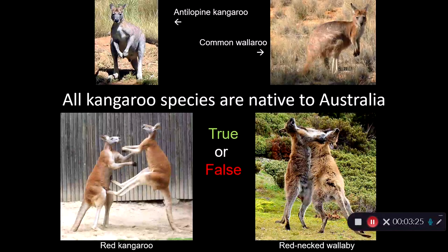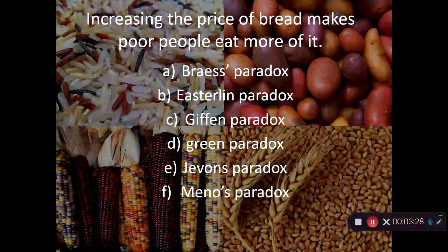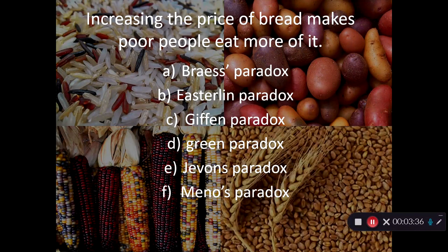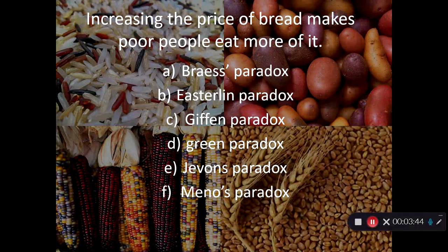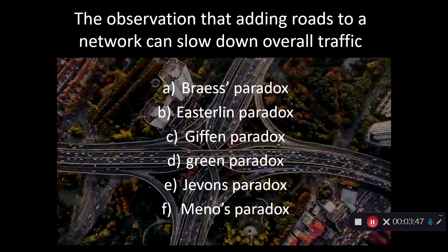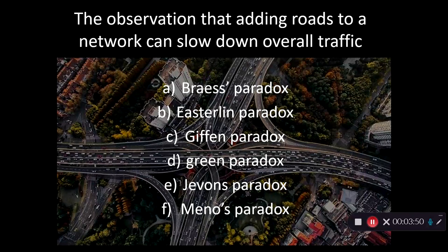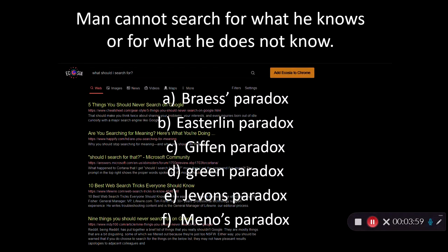And now for some multiple choice questions about paradoxes. Increasing the price of bread makes poor people eat more of it. Which paradox is this? Braas paradox, Easterlin paradox, Geffen paradox, Green paradox, Geffen's paradox, or Menos paradox? The observation that adding roads to a network can slow down overall traffic — which paradox? And: men cannot search for what he knows or for what he does not know — which paradox?